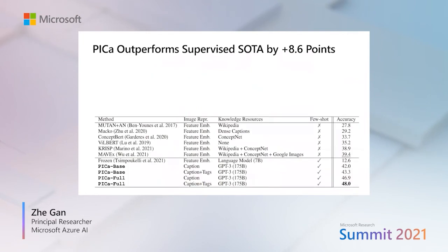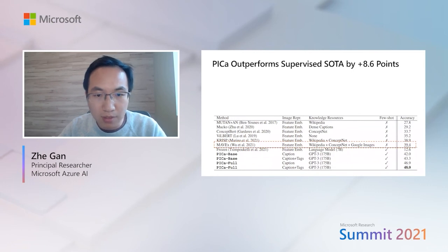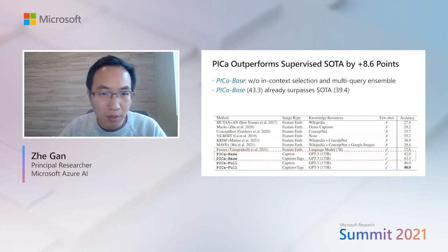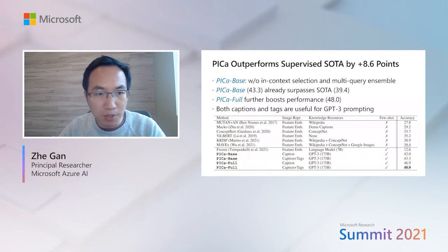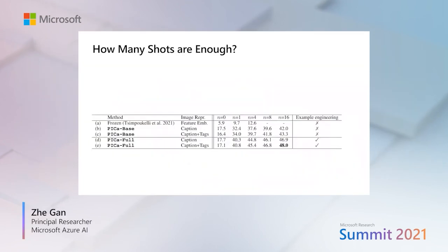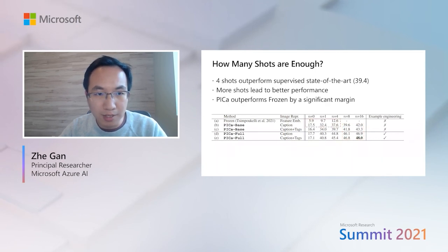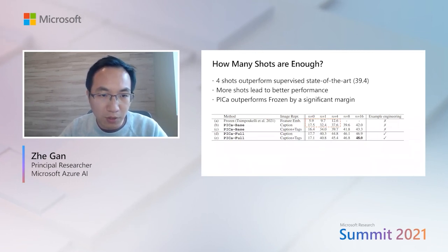Now let me discuss our results briefly. The SOTA approach uses all kinds of knowledge sources — Wikipedia, ConceptNet, Google, image captions — yet achieves only sub-optimal performance. Our PiKa base, without in-context selection and multi-query ensemble, already surpasses the SOTA. PiKa 4 can further boost performance. We also find both captions and text are useful for GPT-3 prompting. Four shots can already achieve SOTA performance, and typically using more in-context examples leads to better performance. Frozen, another recent method by DeepMind for multimodal few-shot learning, is outperformed by PiKa by a significant margin.